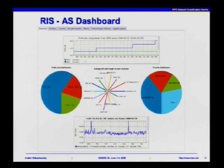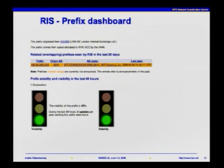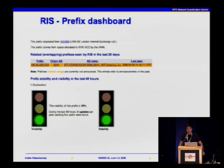We're also trying to collect different RIS data into one single user interface we call the IS dashboard. Here you can see various data related to your AS, such as number of prefixes announced, distribution of prefix sizes, distribution of your AS path to different route collectors, and distribution of transit providers for your AS. You can also see BGP activity on this dashboard. We do similar things for a prefix dashboard, where you can see events related to announcement of your prefix, as well as stability and visibility of your prefix as seen by route collectors — also viewable on a geomap for a particular route collector.